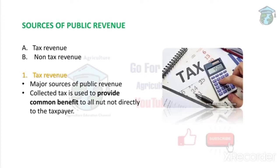The major source is tax. There is also price, but the major source is tax. Public revenue is of two types: tax revenue and non-tax revenue.